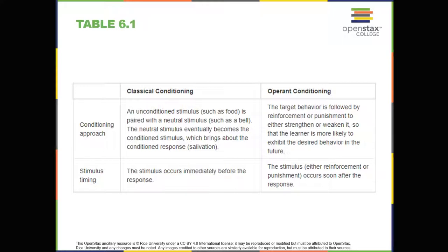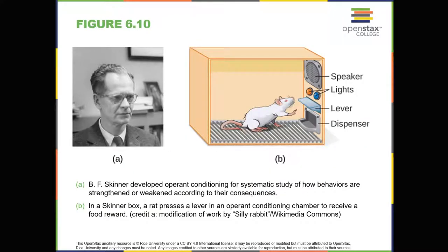A pleasant consequence makes that behavior more likely to be repeated in the future. For example, Spirit, a dolphin at the National Aquarium in Baltimore, does a flip in the air when her trainer blows a whistle. The consequence is that she gets a fish.